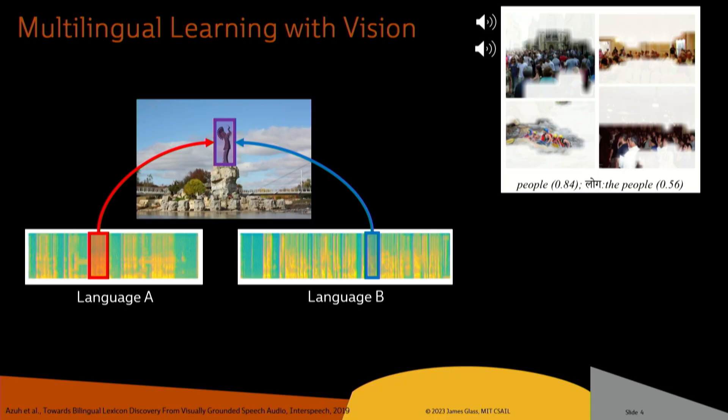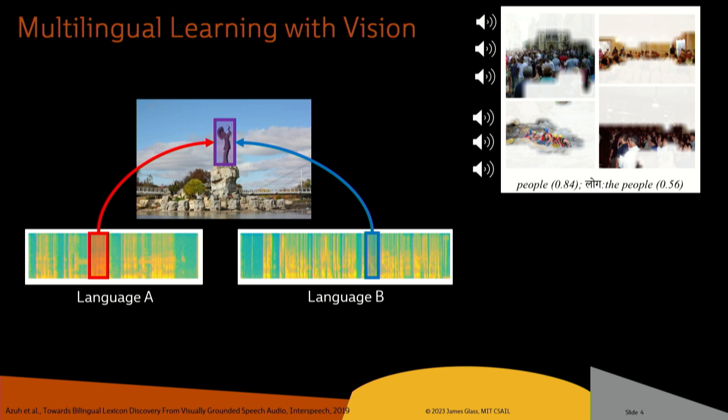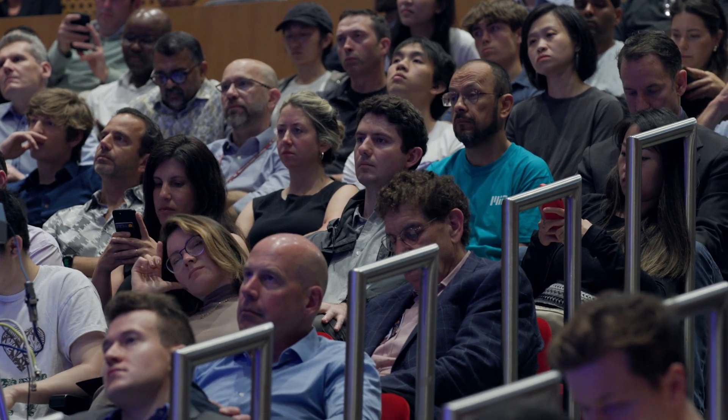So let me show you, for English and Hindi, a couple of different clusters that pop out. You might have heard 'body of water' and 'lake' — and that's because it's being represented semantically, not phonetically or anything like that.